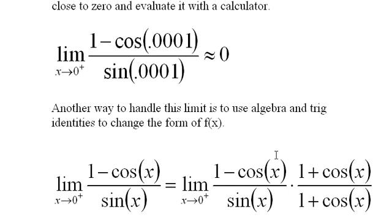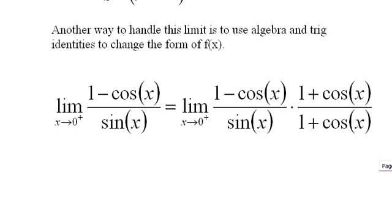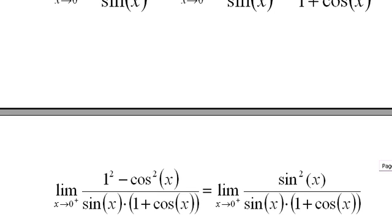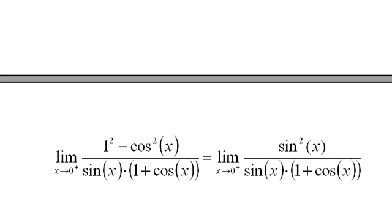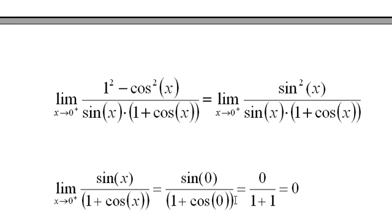Then I'll have 1 - cos²(x) on top, and I'll have sin(x) times 1 + cos(x) on the bottom. Now this changes to sin²(x), which is going to allow us to do some cancellation here. And when I cancel, I end up with sin(x) over 1 + cos(x).